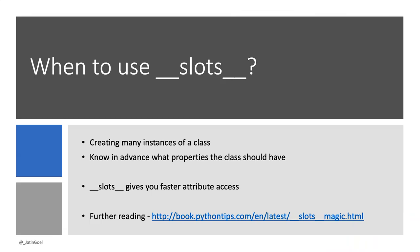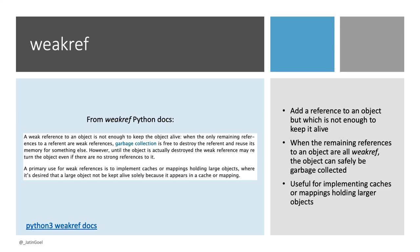When should you use slots? Use them when you're creating many instances of a class and you know in advance what properties that class should have. Slots also give you faster attribute access, so you save memory and get better CPU performance. For further reading, there's an article linked that covers this in detail.